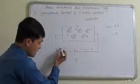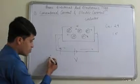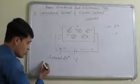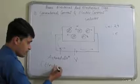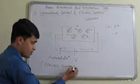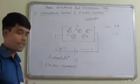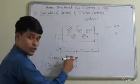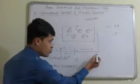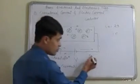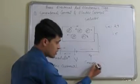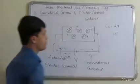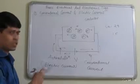So this direction of the electric current, we are calling it the actual direction of the current — or we call it electric current. But during solving problems, we consider the current direction to be from the positive terminal to the negative terminal. This direction, we call conventional flow or conventional current. This is the difference between the actual current, or electric current, and conventional current.